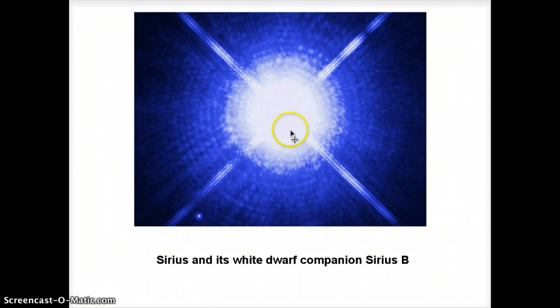The big star in this picture is Sirius. Sirius is a main sequence star, type A, about 10,000 degrees, and very well known. It's the brightest star in the night sky, the star with the biggest apparent brightness.